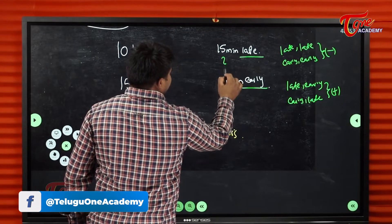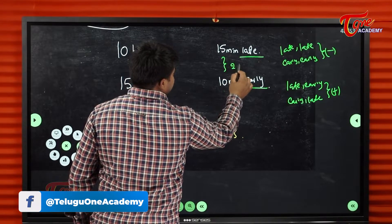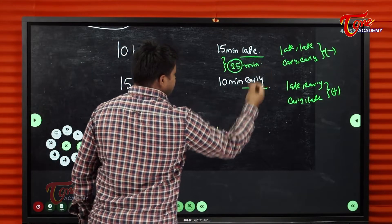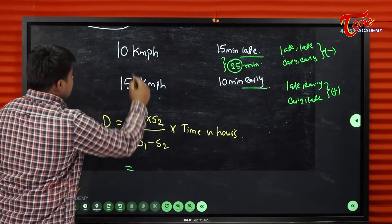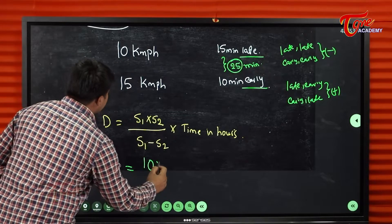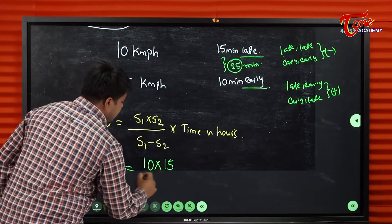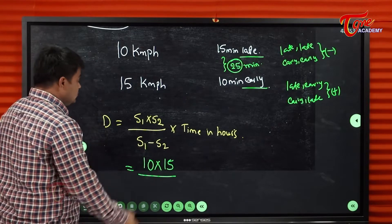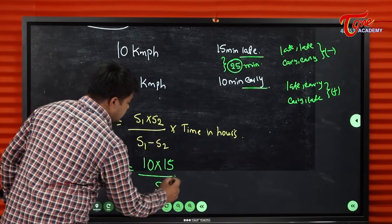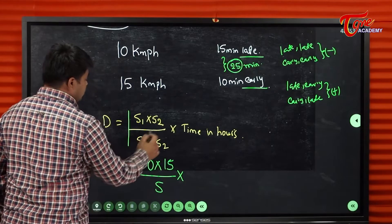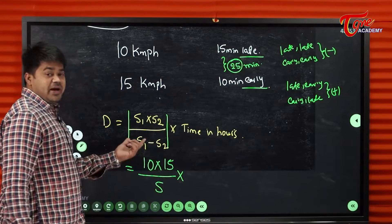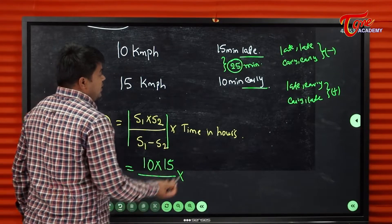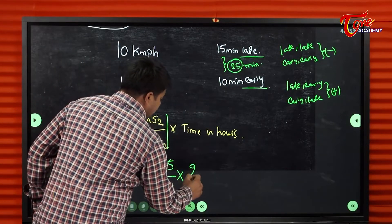Since one case is early and one is late, we have to add the times: 50 + 10 = 25 minutes... wait, that's 60 minutes — actually 50 minutes late plus 10 minutes early gives us the total time difference. So we apply: 10 × 15 / (15 − 10) × 25 minutes, converting 25 minutes to hours.